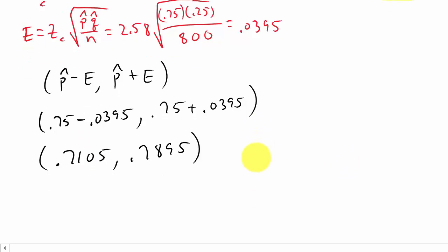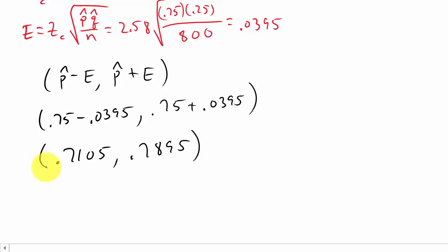So this is our interval. Or we could say 71.05% to 78.95%. So we can say with 99% confidence that the number of successful flu vaccines would be 71.05% to 79.95% of the entire population of the 20,000.